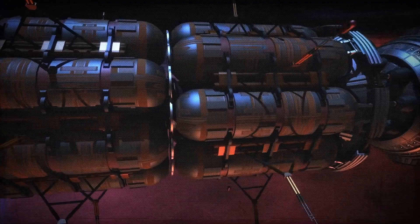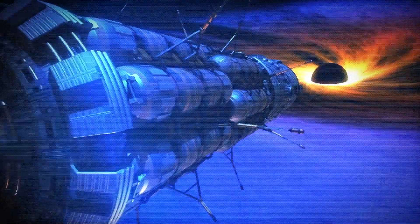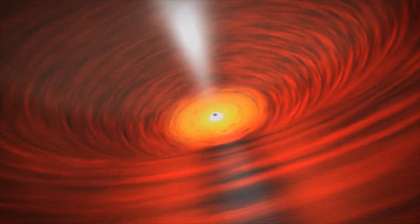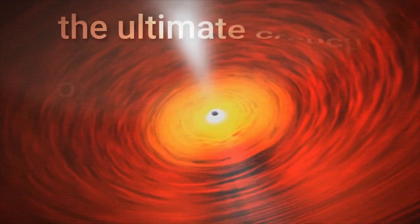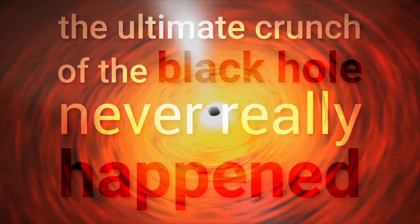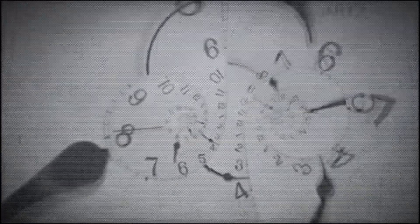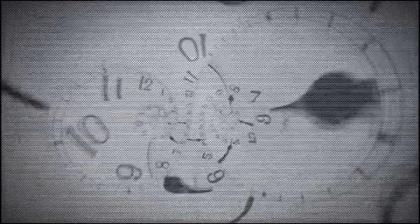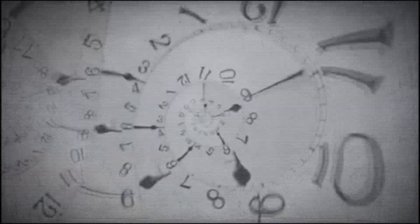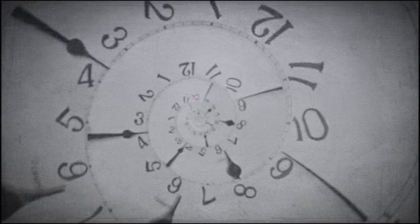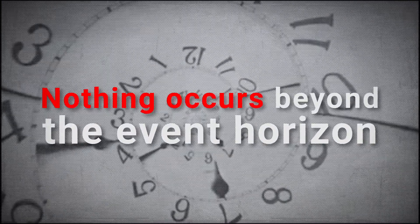So if we can't see what a black hole looks like from the inside, why can't we see it from the outside? Aside from the fact that light exiting a black hole is red-shifted into oblivion, the ultimate crunch of the black hole never really happened. From an outside observer, time is frozen at the event horizon relative to their clocks. Anything beyond the event horizon is no longer a part of the timeline of the outside universe.